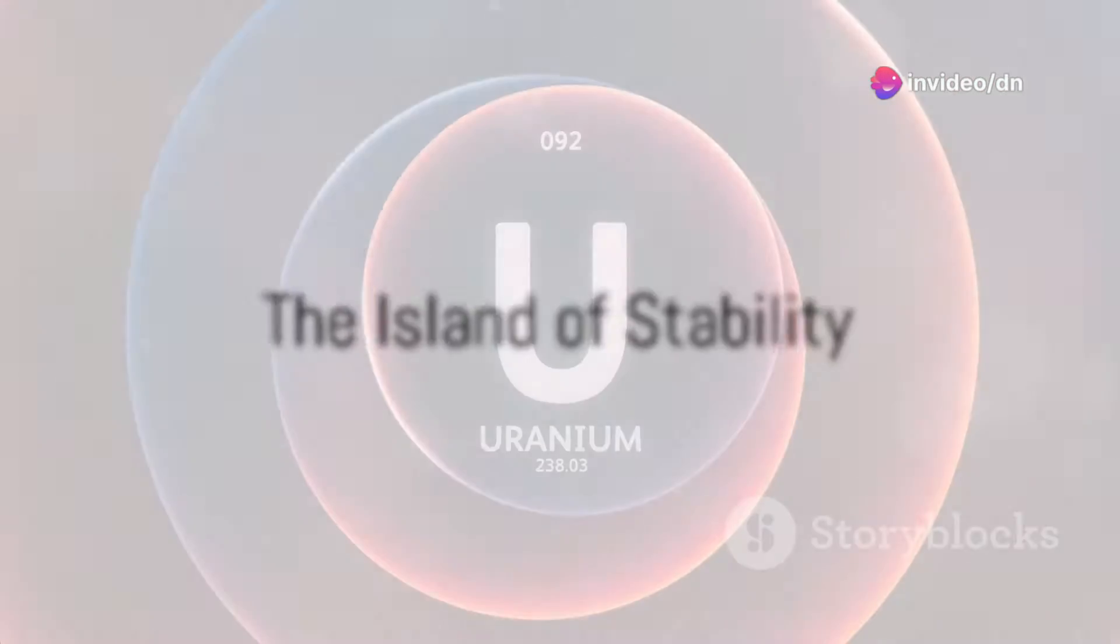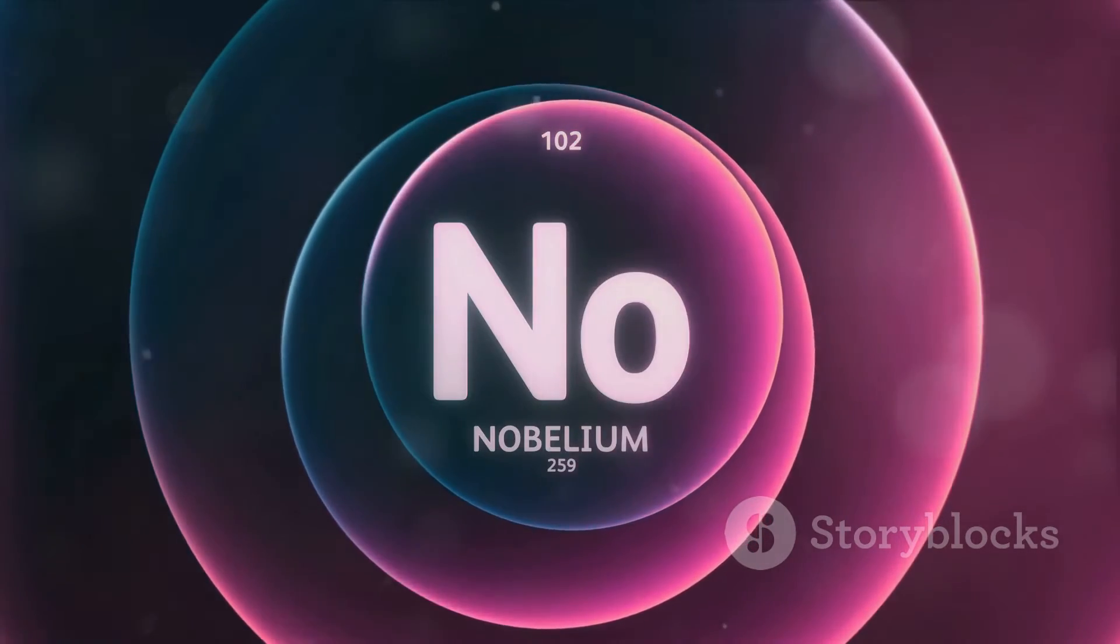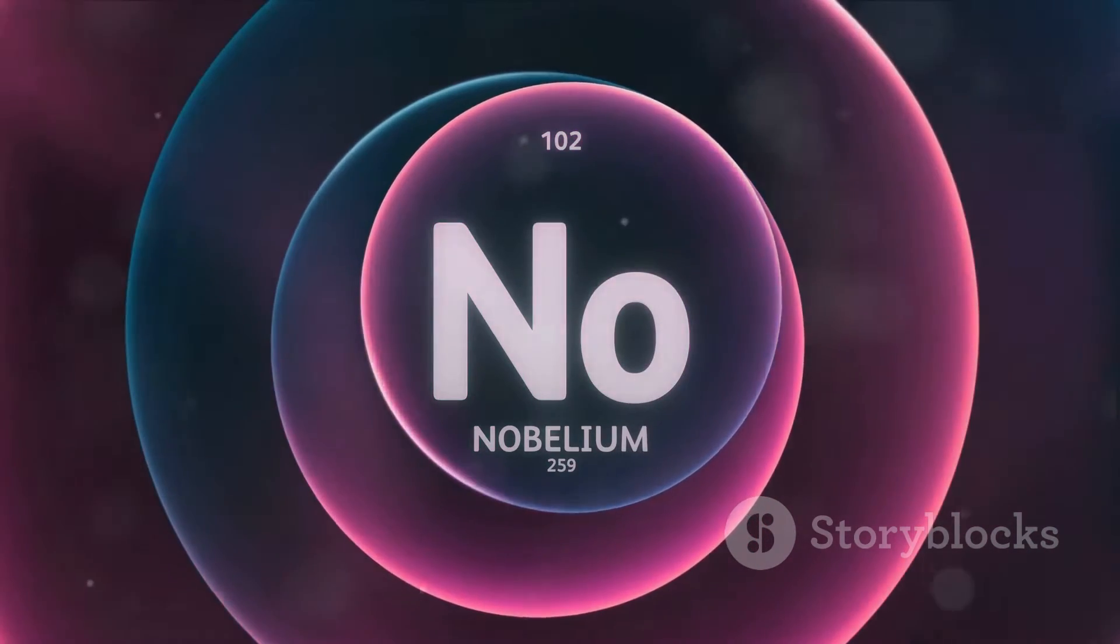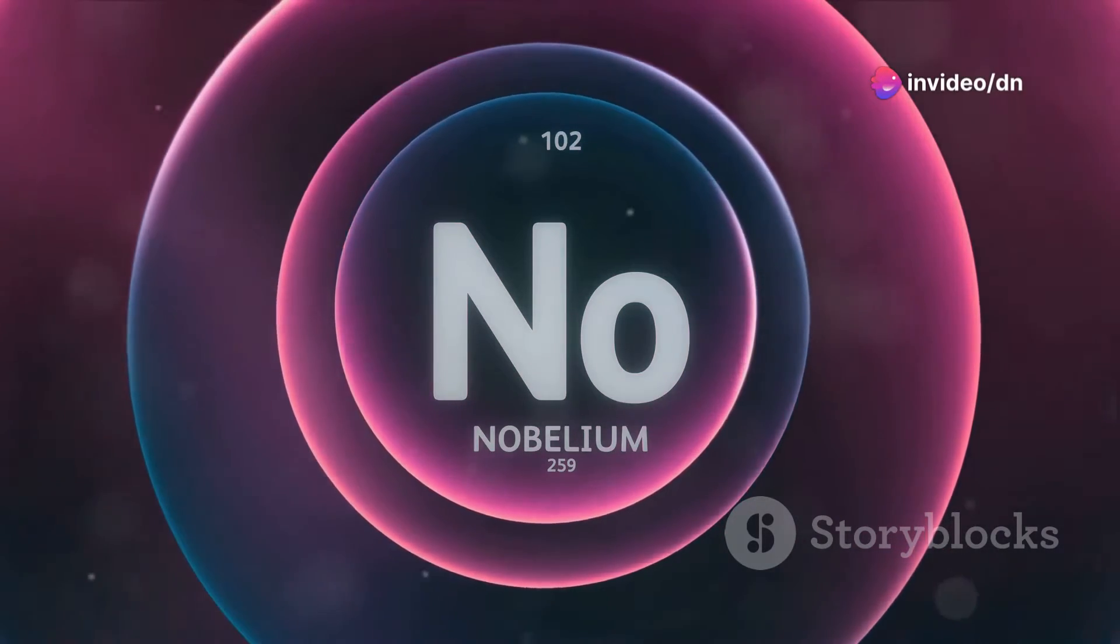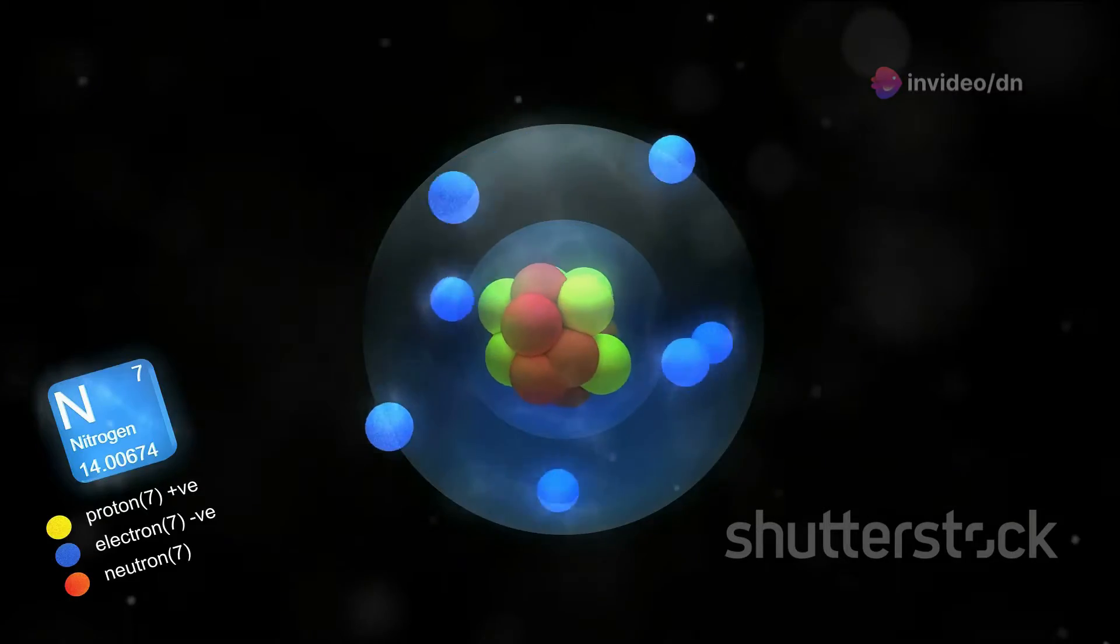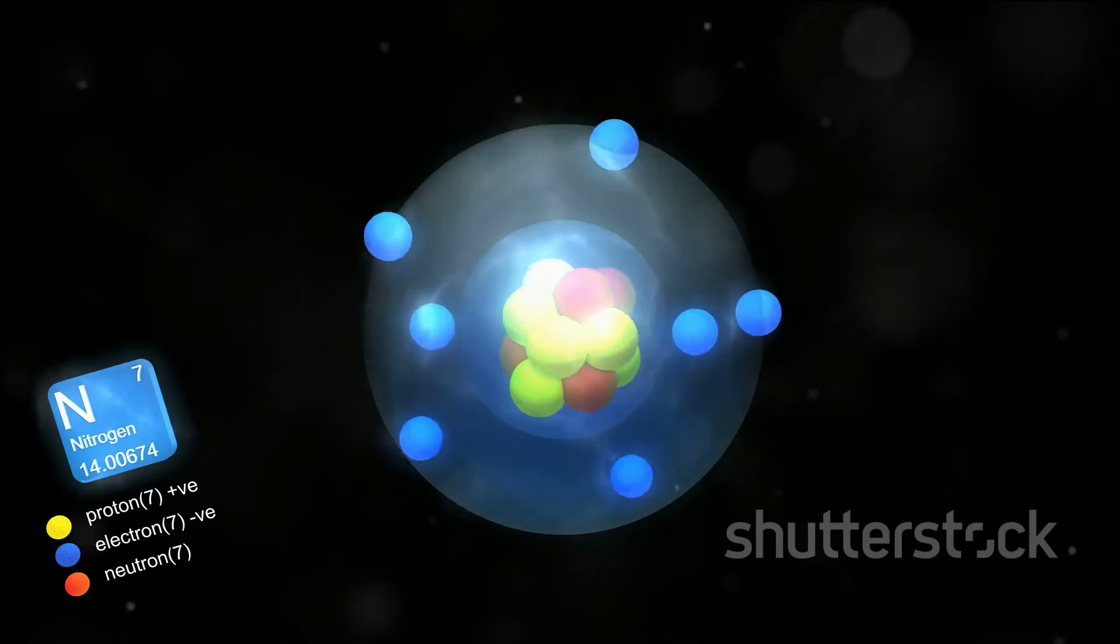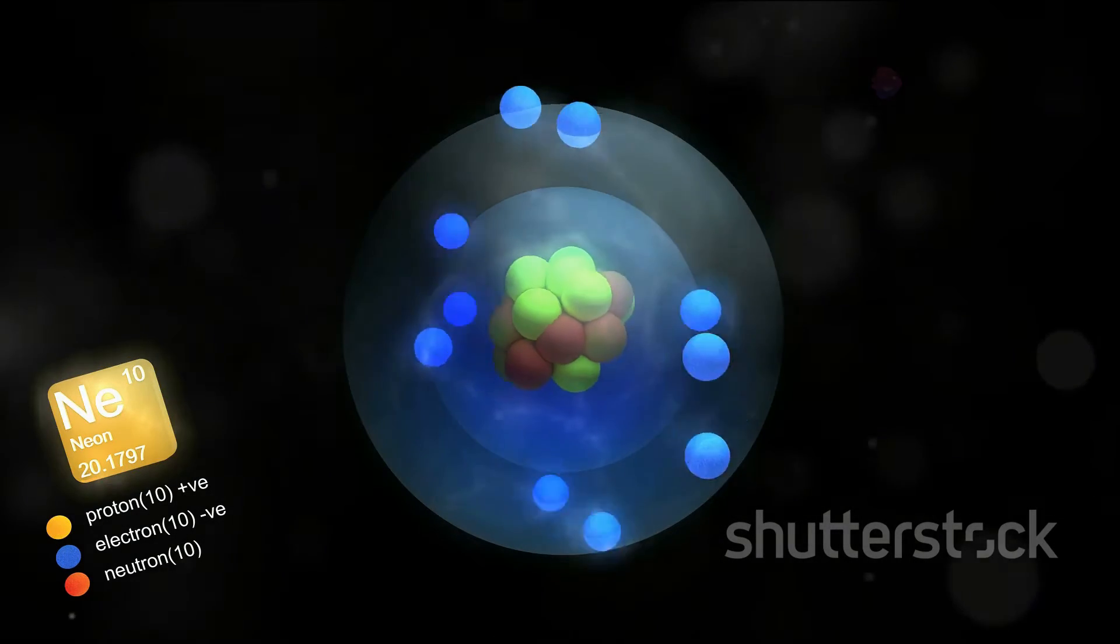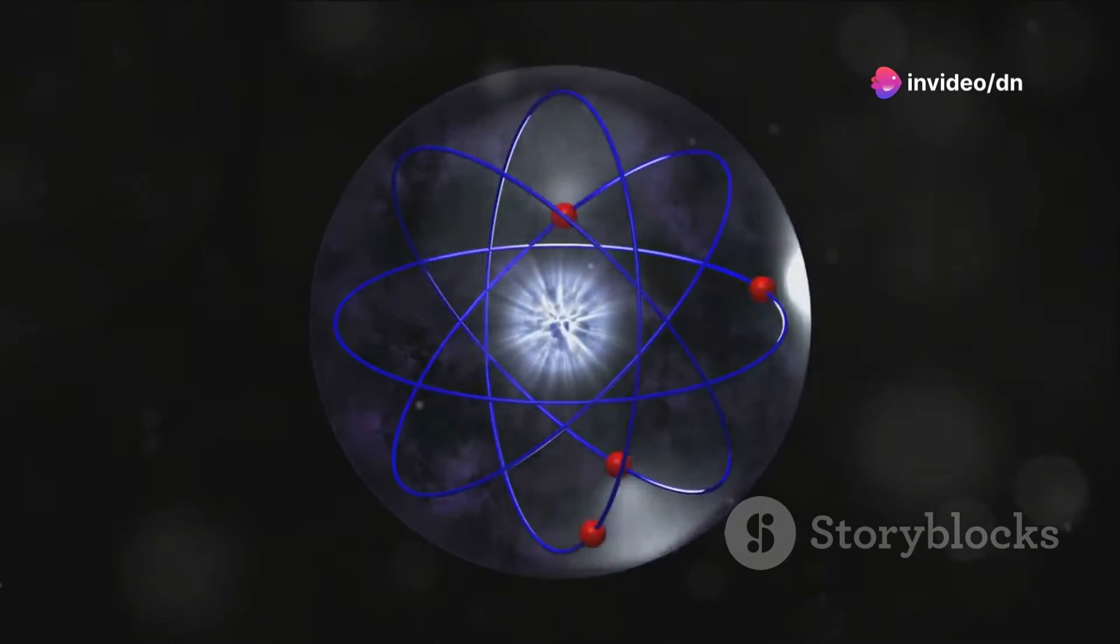It's a journey that is still ongoing, with many exciting discoveries yet to come. There's a fascinating concept in the world of super-heavy elements: the island of stability. This intriguing idea revolves around the prediction that there exists a region in the chart of nuclides, where super-heavy elements, like ununenium, could display increased stability compared to their neighbors. The term 'island' is quite apt here, as this zone of stability is surrounded by a sea of less stable elements. Now, what makes this island so special?